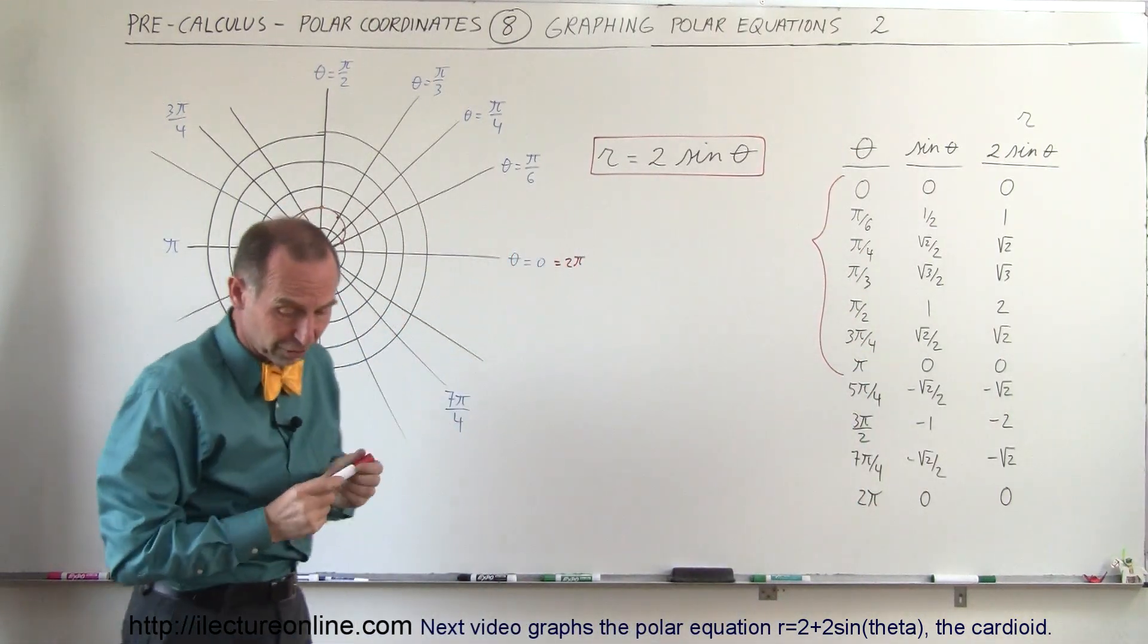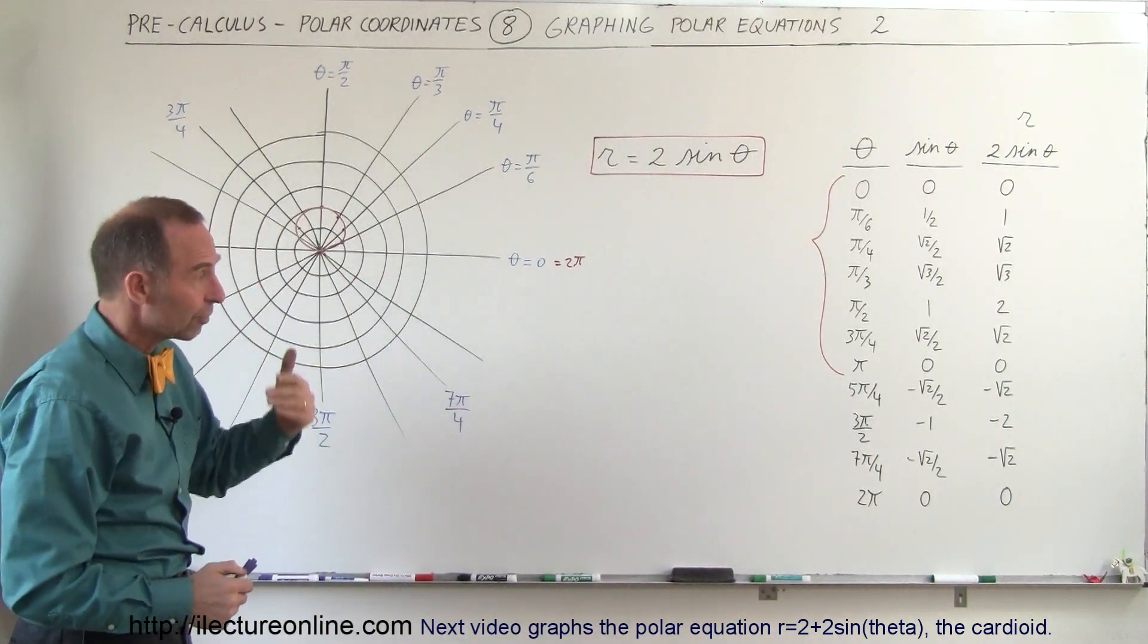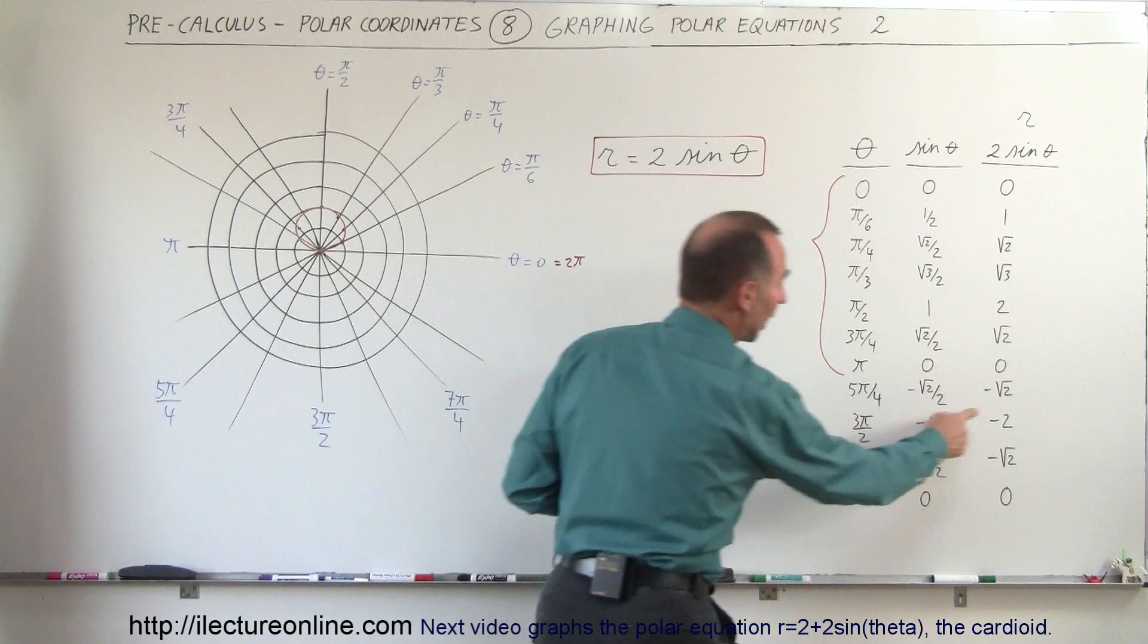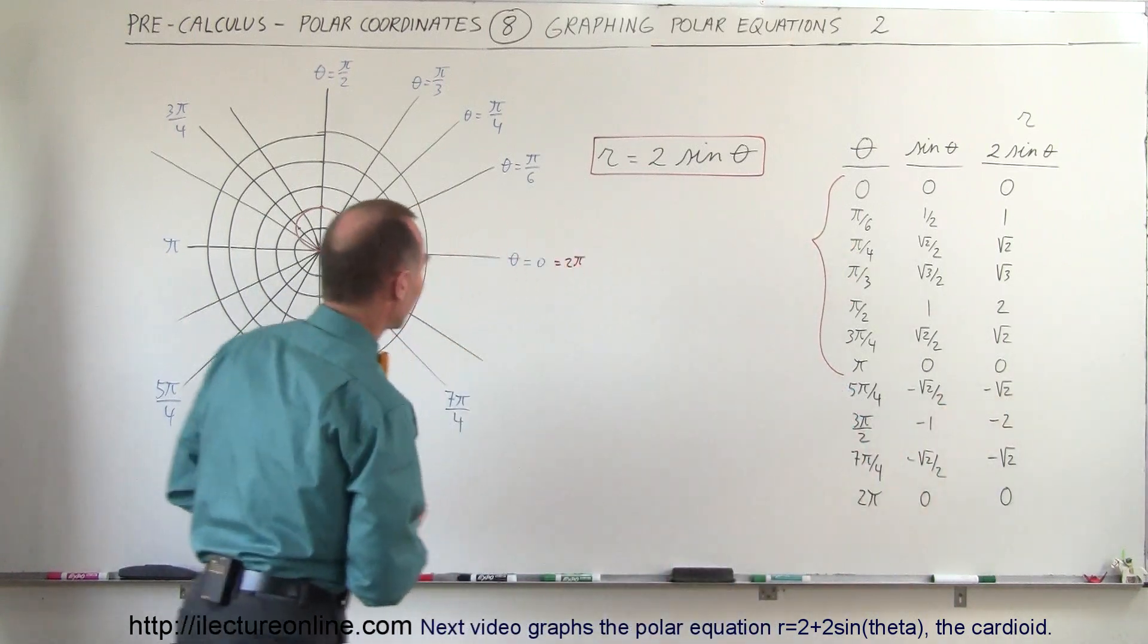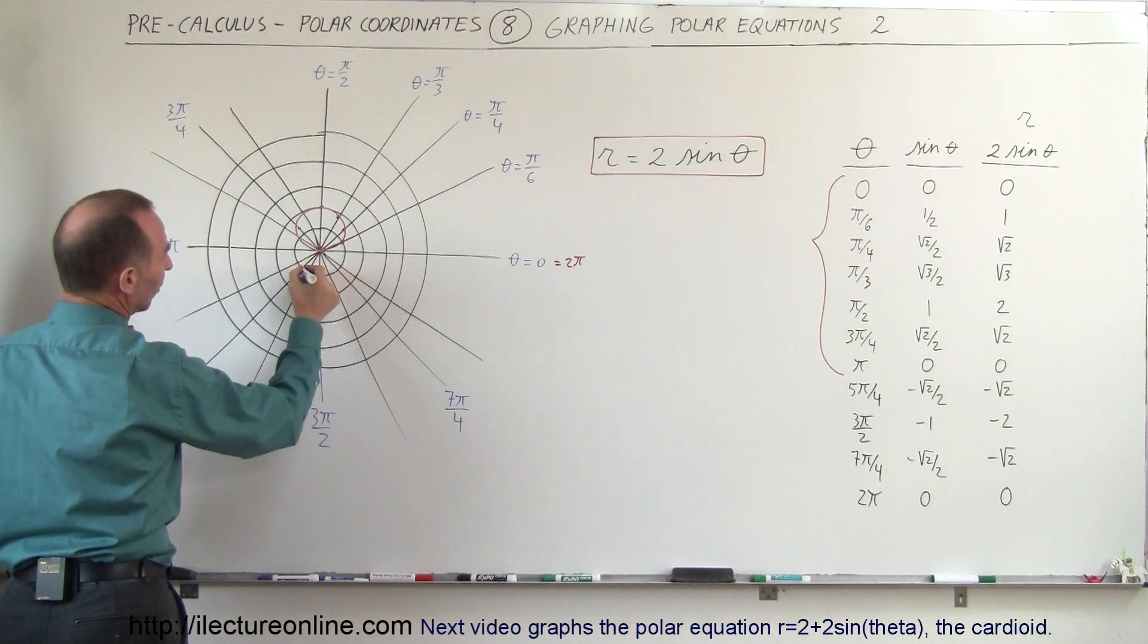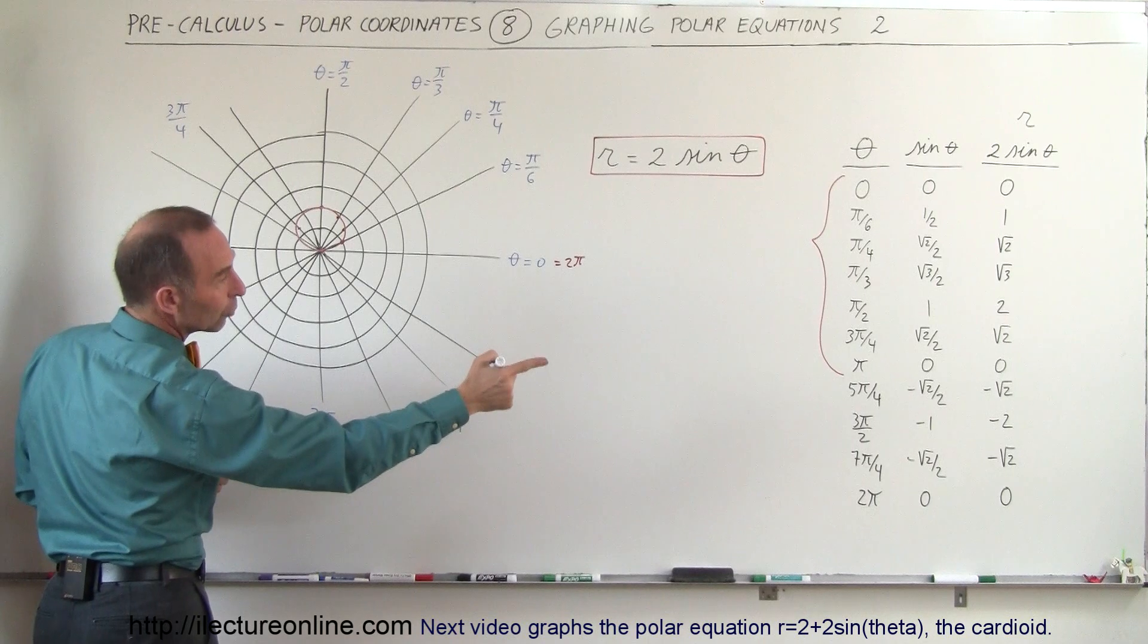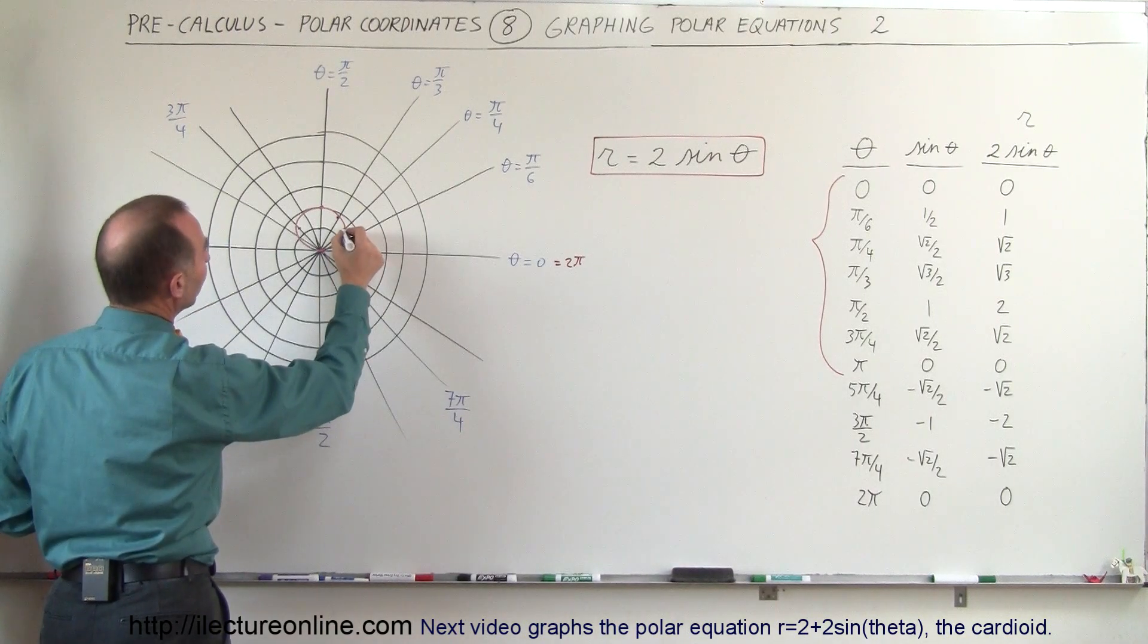Now let me use a different color, so let's use purple. If we continue to 5π over 4, notice now the number is minus the square root of 2. So when we go all the way to 5π over 4 right here, instead of going out this direction, it's a negative number so we should go back. How far back? To square root of 2, that puts us right back there again.